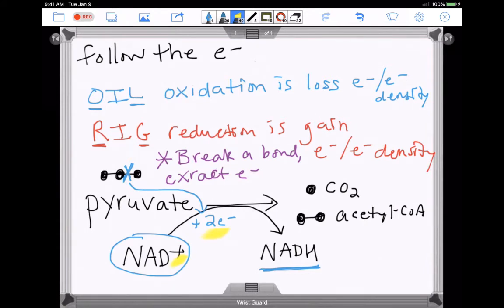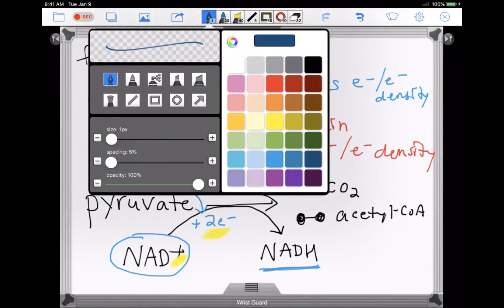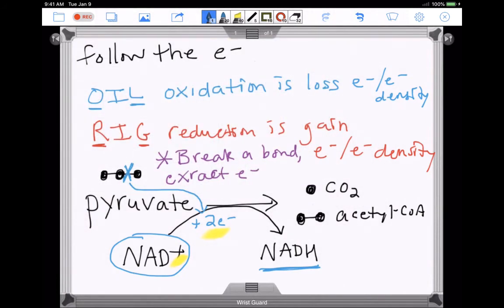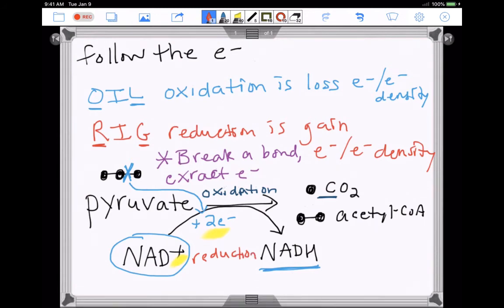So what does that mean here for our purposes? Who is oxidized? Pyruvate is losing electrons, right, so pyruvate is oxidized. And then reduction is the gain of electrons, so we'd say NAD+ is reduced to NADH because it gains electrons.